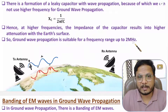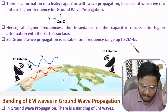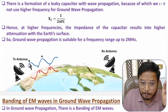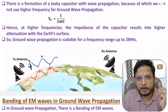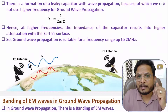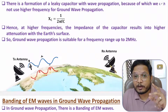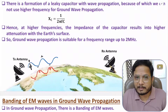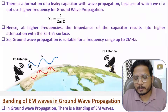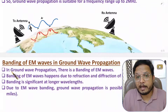Ground wave propagation is suitable for the lower frequency range — up to 2 megahertz. With AM broadcasting, we use ground wave propagation and can transmit signals up to a few thousands of kilometers. For example, an AM signal from China can sometimes be received in India, because ground wave propagation can cover a few thousand kilometers.